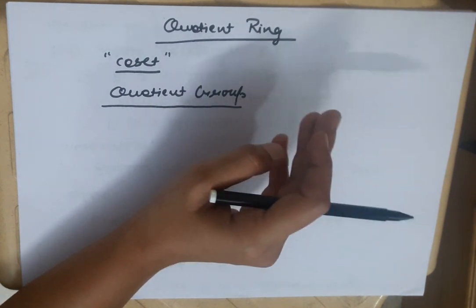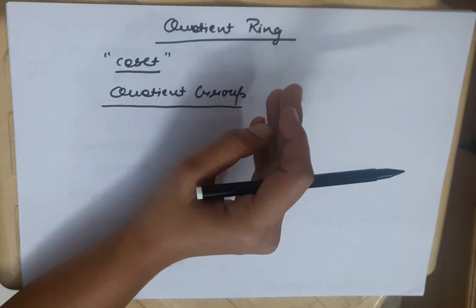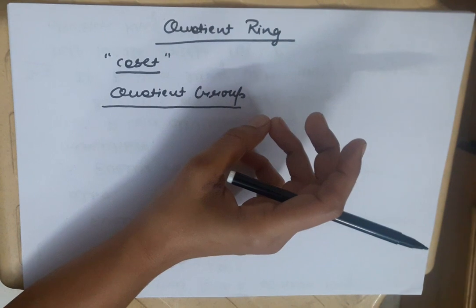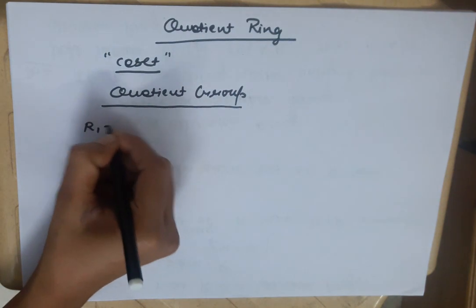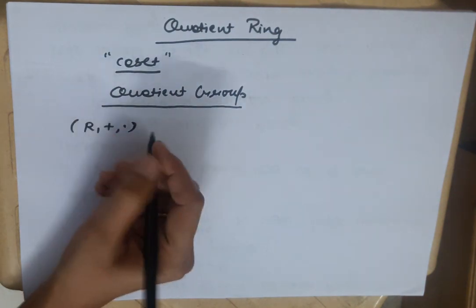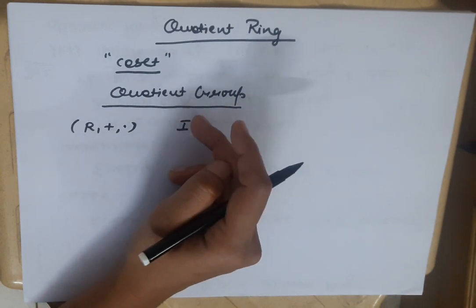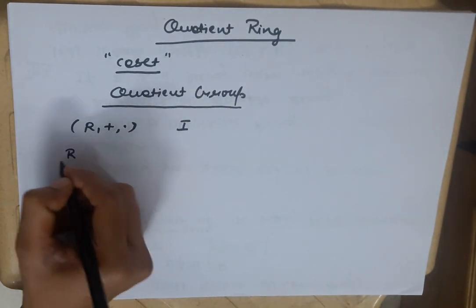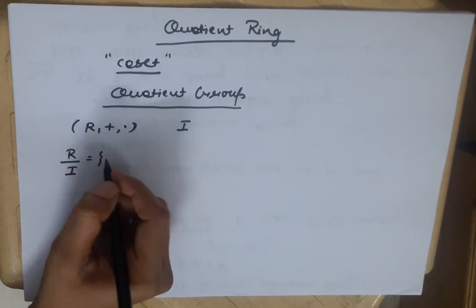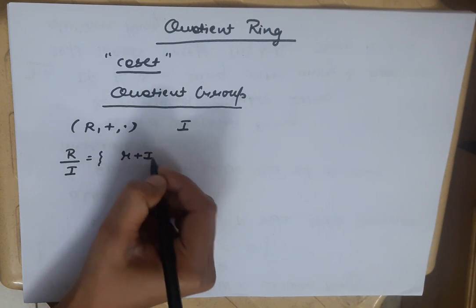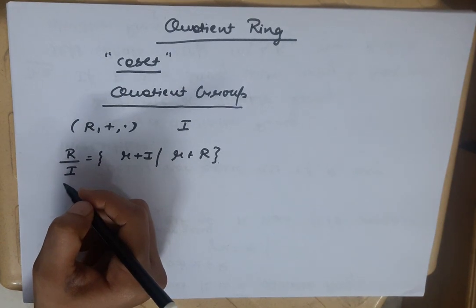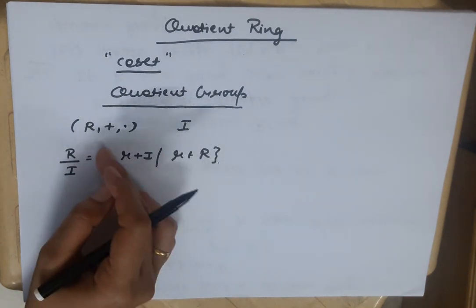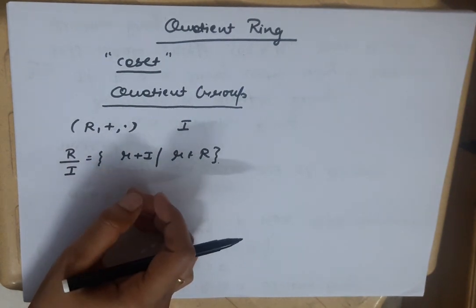First of all, I will tell you in today's video what kind of collection is called a ring, and ultimately we call it a Quotient ring. Suppose we have R (plus, dot), a ring, and I is an ideal. So we have a collection R/I — elements of the form r plus I, such that r belongs to R. This collection is R/I, and we will prove that this forms a ring.